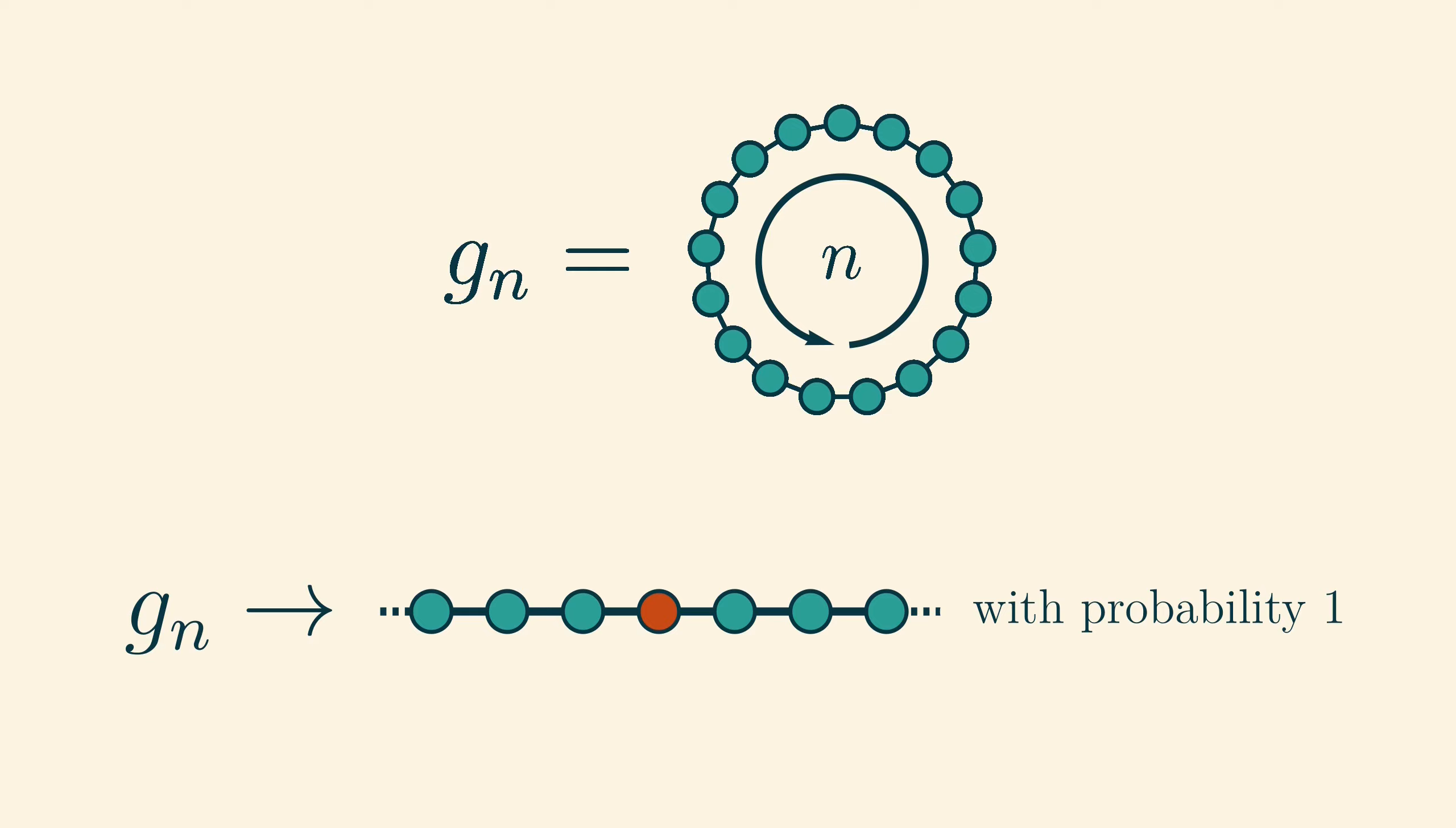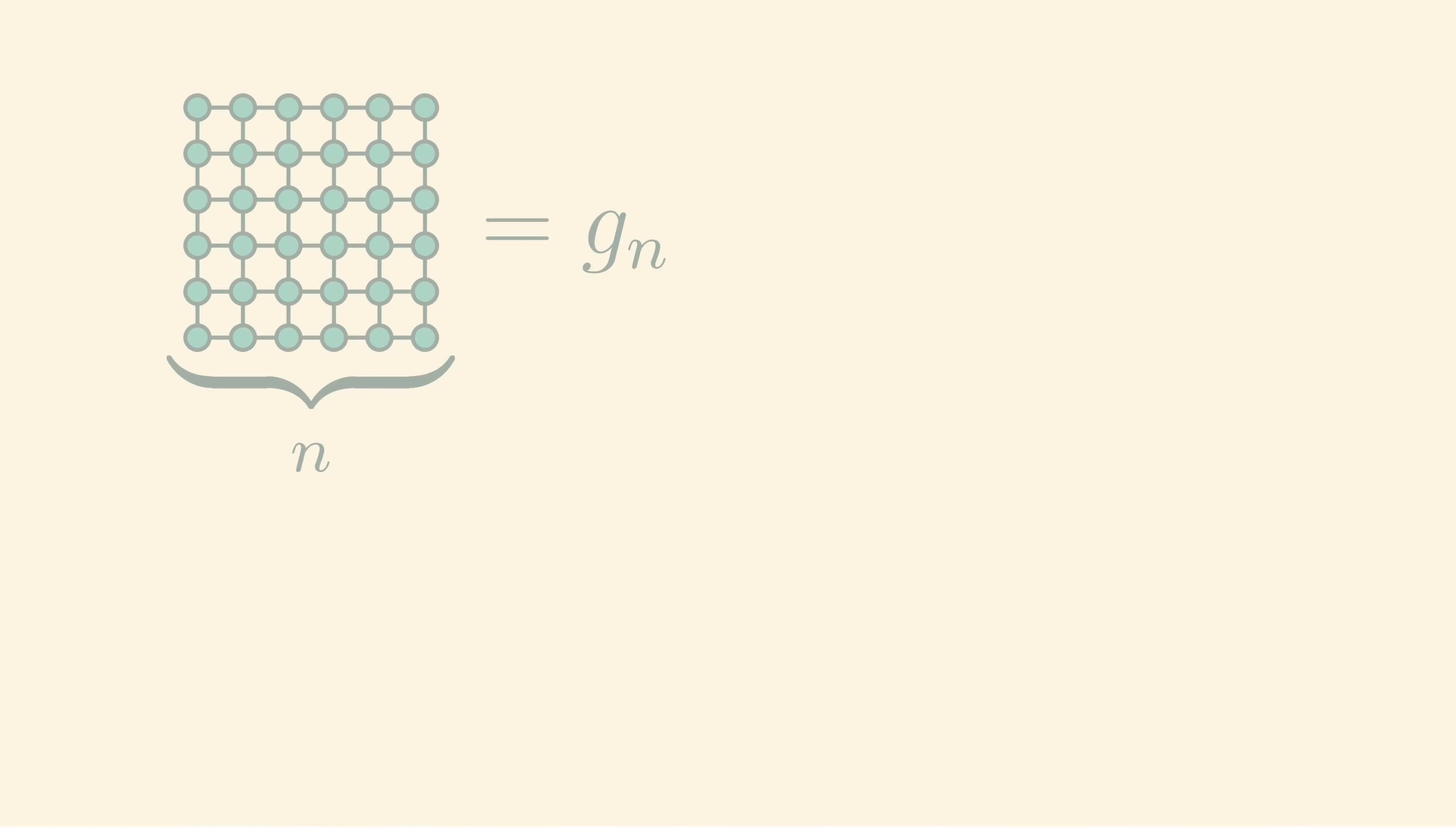Somehow, the fact that the cycle is connected to itself on the opposite side is lost in the limit. This is analogous to how it is difficult to see the curvature of the Earth when you are standing on it and it is why the type of convergence we have described is often called local convergence.